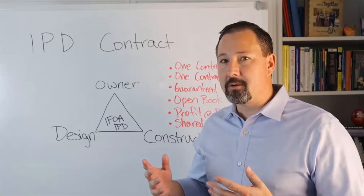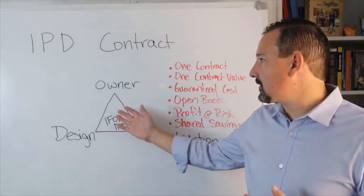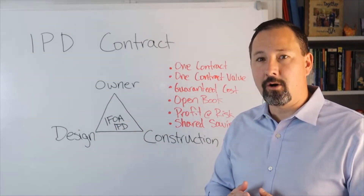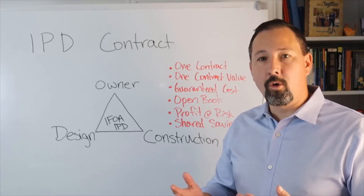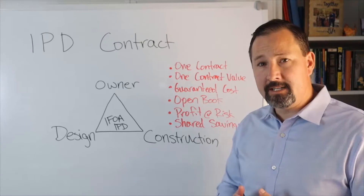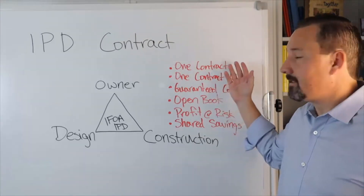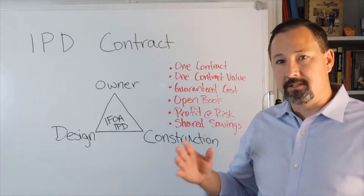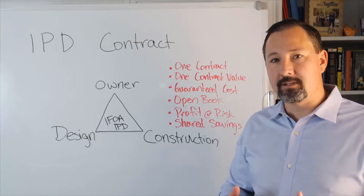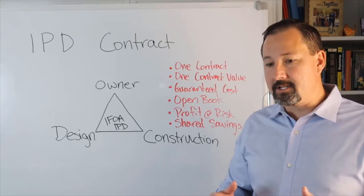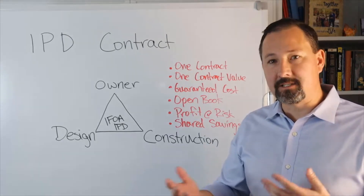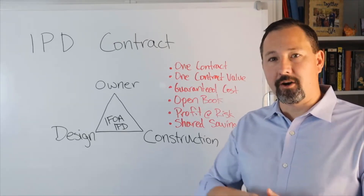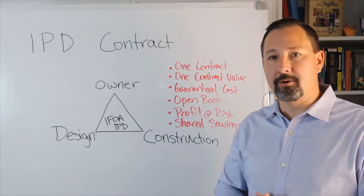The primary difference with integrated project delivery is that there is a single contract where the owner, the primary designer, and the primary builder sign a single contract. This is often called an integrated form of agreement or an IPD contract. Within this structure, there are a couple of key points. There's a single contract for a single dollar value. Design and construction are aggregated into a single amount, which is either called the target cost or the estimated maximum price, depending on which version of the contract you're using. In summary, design and construction are aggregated into a single dollar value that the owner contracts for.